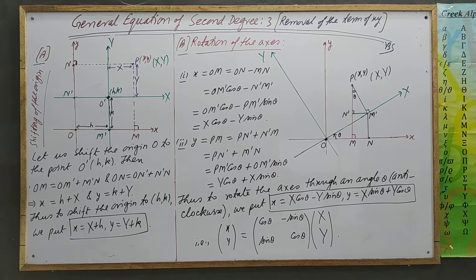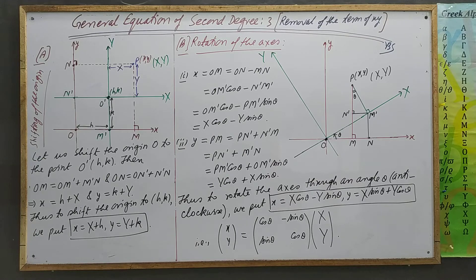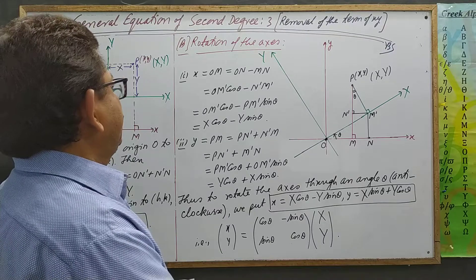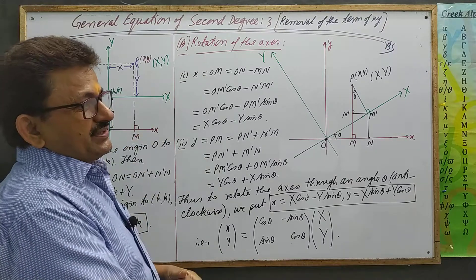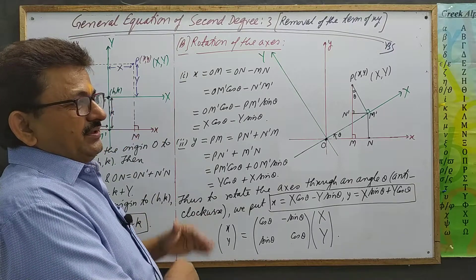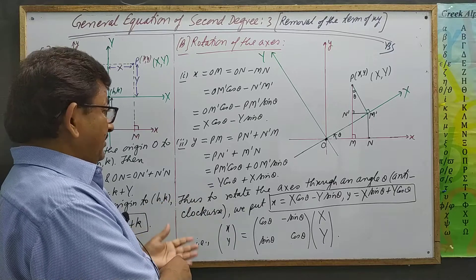Hello students, this is the third video on the general equation of second degree, which includes removal of the term of xy. In the process of removal of the term of xy, we need the idea of rotation of the axis. So firstly we discuss this.